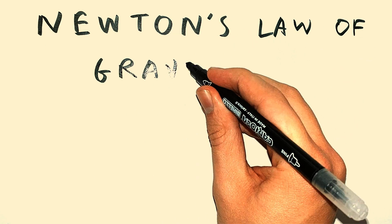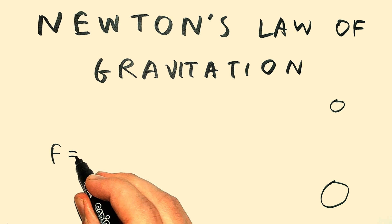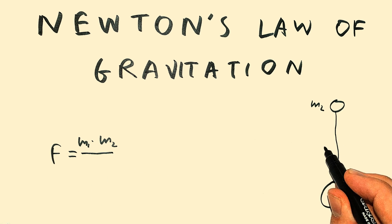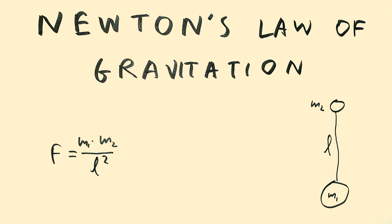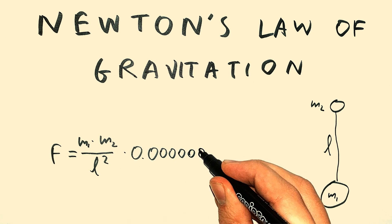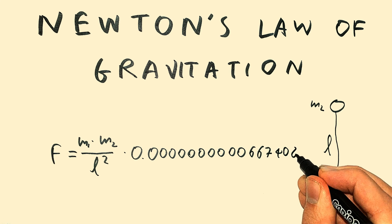You are probably familiar with G from Newton's law of gravitation. The force between two objects is equal to the product of their masses, divided by the distance between them squared, and last, but most certainly not least, multiplied by 0.000000000000667408.